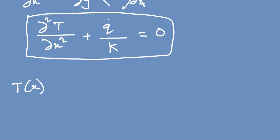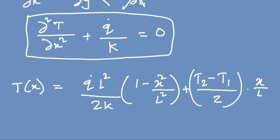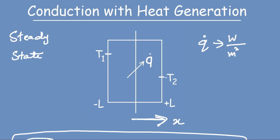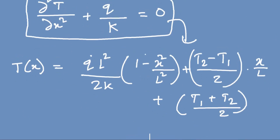The solution T(x) equals q_dot·L² divided by 2k times (1 minus x²/L²), plus (T2 minus T1)/2 times x/L, plus (T1 plus T2)/2. I am not showing the full mathematical derivation — what is important is this end result, which is the temperature profile for this case.